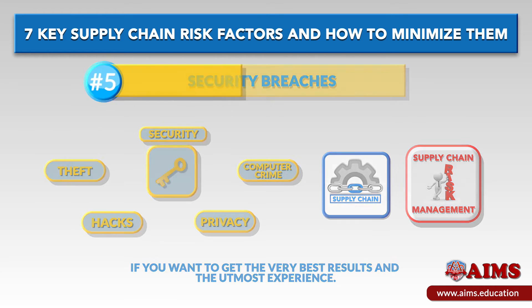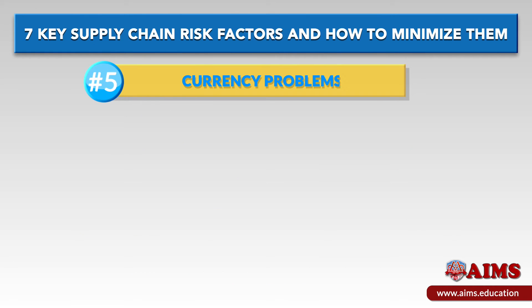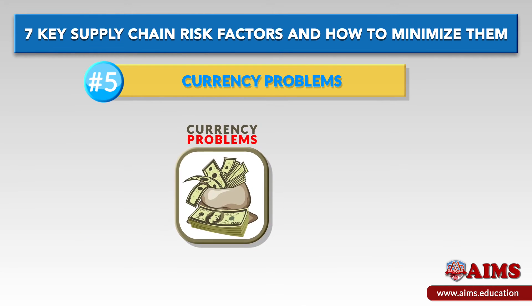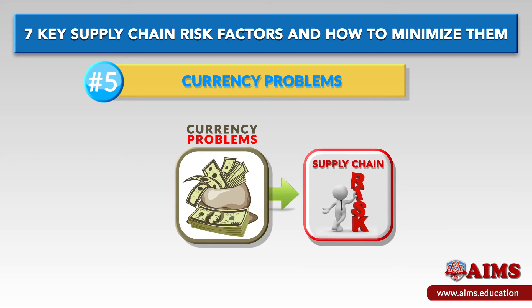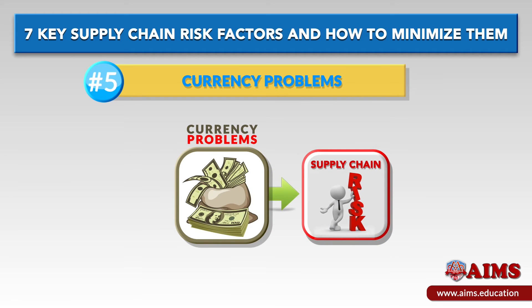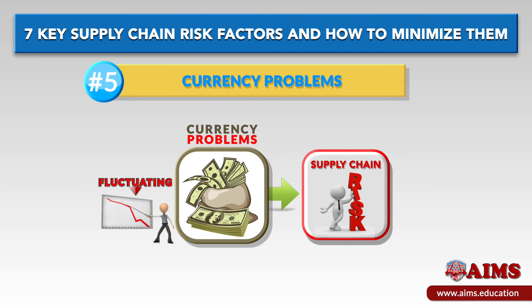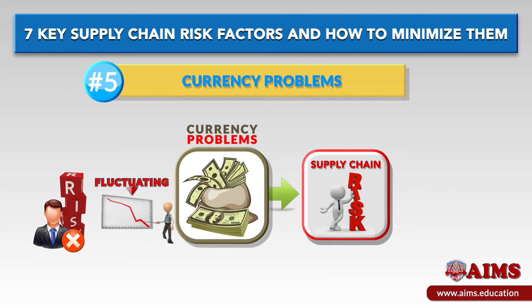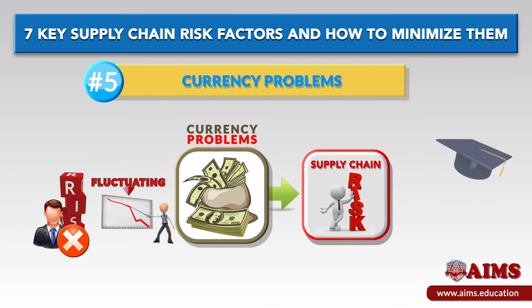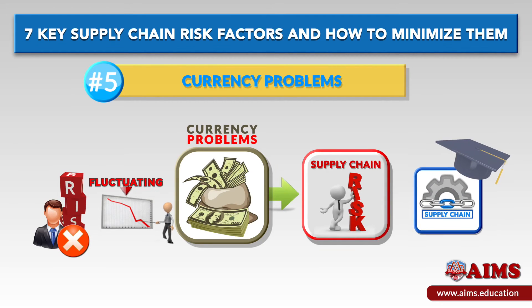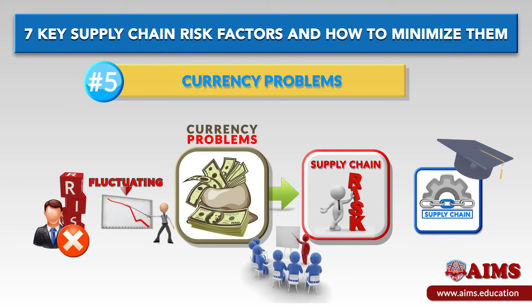Factor number five: currency problems. Currency problems can also be seen as a supply chain risk, especially since they tend to appear very often when a certain currency is fluctuating. Unfortunately, this is one of the risks that you have no control over. A good institute of supply chain management might be able to help here.